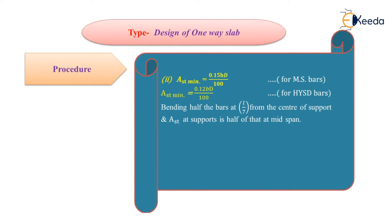For bent up bars, we will bend half the bars, bending alternate bars. From the center of support, the bending length is L by 7. Similarly, AST at the support is half that of at the mid span.